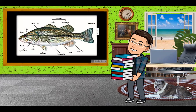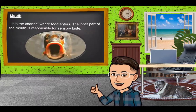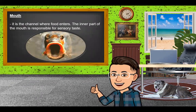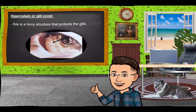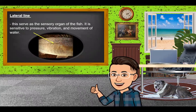The picture shows the different external parts of the fish. The first is the nostril, which helps the fish locate their food by means of smelling. Next is the mouth — it is the channel where food enters, and the inner part is responsible for sensory taste. We have the operculum or gill cover, a bony structure that protects the gills. Next is the lateral line, which serves as the sensory organ of the fish and is very sensitive to pressure, vibration, and movement of water.